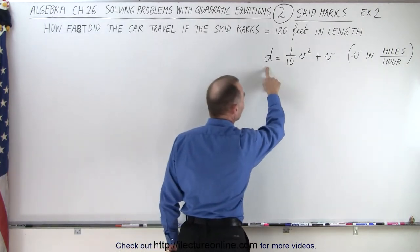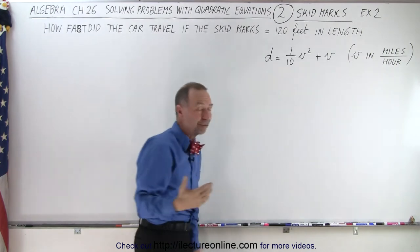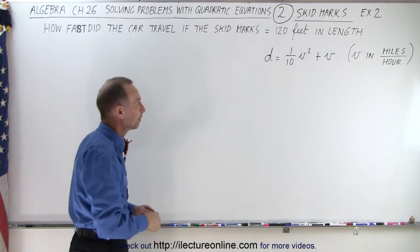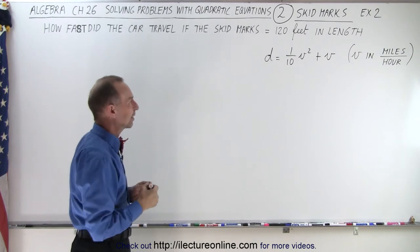And so here's the equation that tells us that the distance is 1/10 v² + v, v of course being the velocity of the car. So how fast was the car going? Let's try to figure that out.